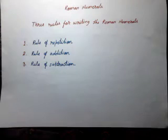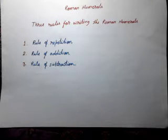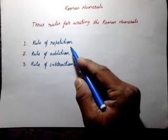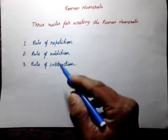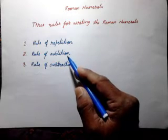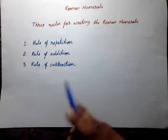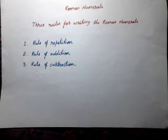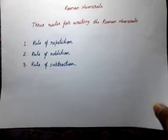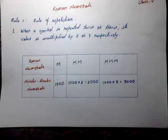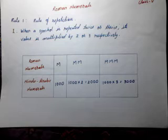We need to remember and learn three rules while writing Roman numerals: first, the rule of repetition; second, the rule of addition; and third, the rule of subtraction. Let us learn each rule one by one. Rule one: the rule of repetition.